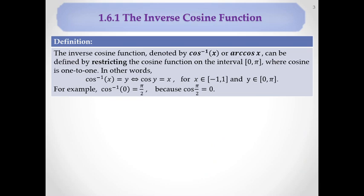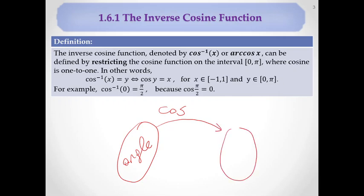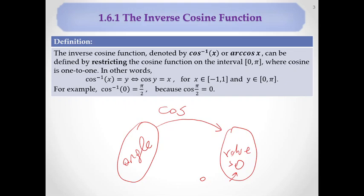Our goal here is this: when defining the inverse function, a trigonometric function generally starts with the angle. We give an angle and by the cosine we find the value. For example, cosine of 90 degrees gives you zero — so 90 degrees goes to zero. Here we want to do the reverse of this.